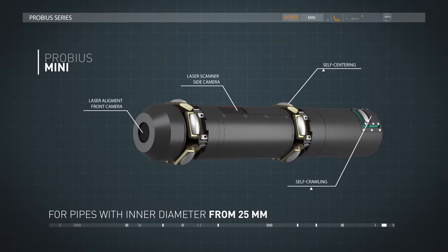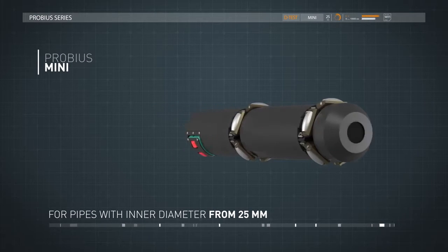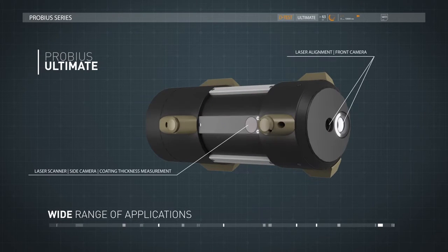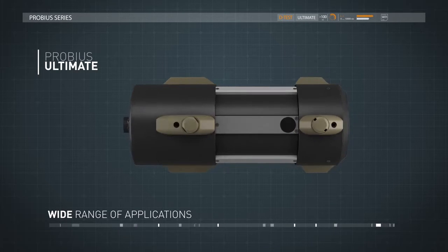ProBius Mini, a system for non-contact measurement and video inspection of small diameter tubes. ProBius Ultimate, one of the most popular systems suitable for diameters of over 100 mm with a wide range of measuring capabilities.